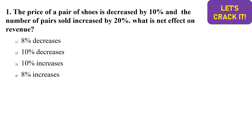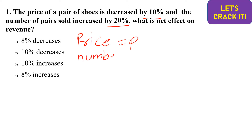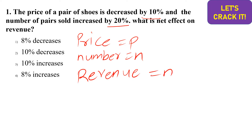The first question: the price of a pair of shoes is decreased by 10 percent, whereas the number of pairs sold increased by 20 percent. We need to find the net effect on revenue. Let price equal p and the total number of shoes sold equal n. The initial revenue is n into p.